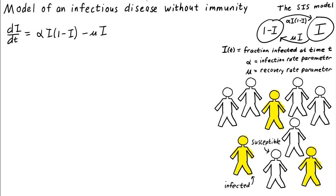In the notation of the model, i is the fraction of individuals infected at time t, and since individuals are either infected or susceptible, 1 minus i, or 1 minus i of t, is the number of individuals that are susceptible at time t.